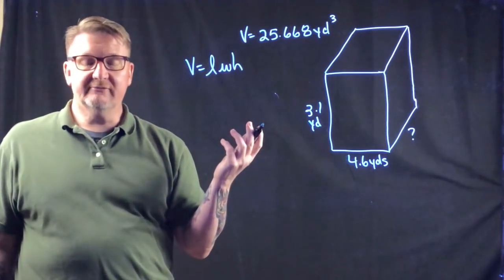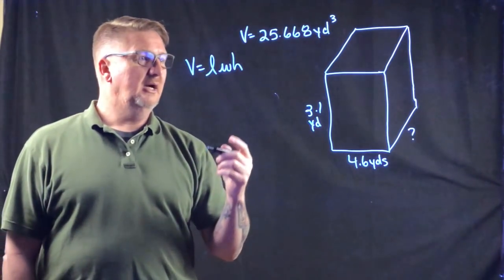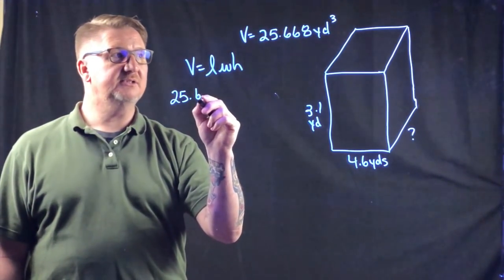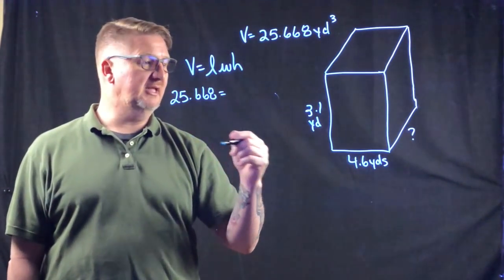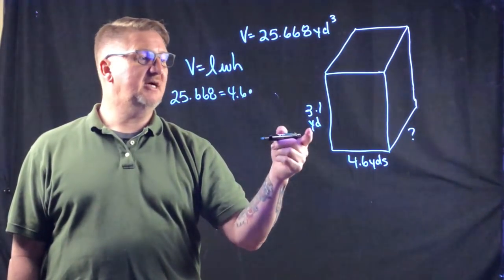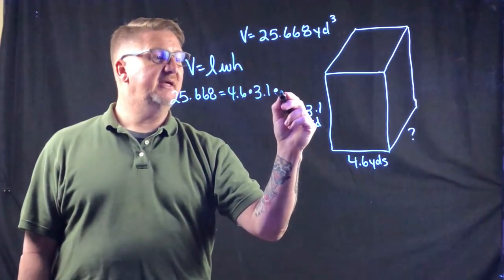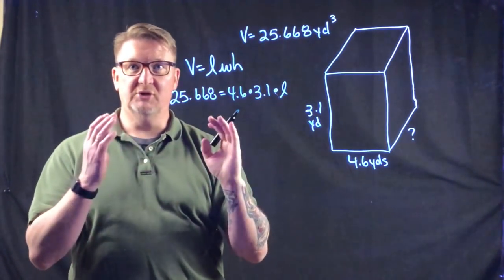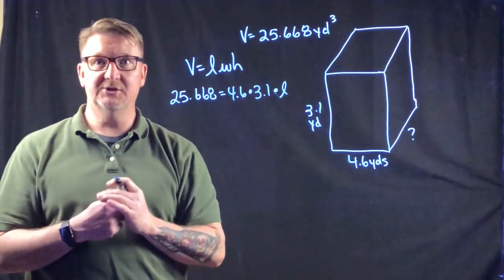We follow the same formula: volume equals length times width times height. Plugging in: 25.668 equals L times 4.6 times 3.1. This is essentially an algebraic one-step equation — we need to combine the known values and isolate the variable for length.